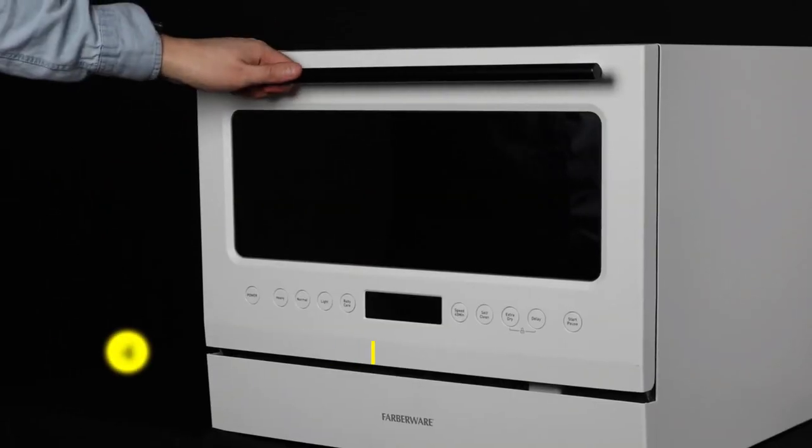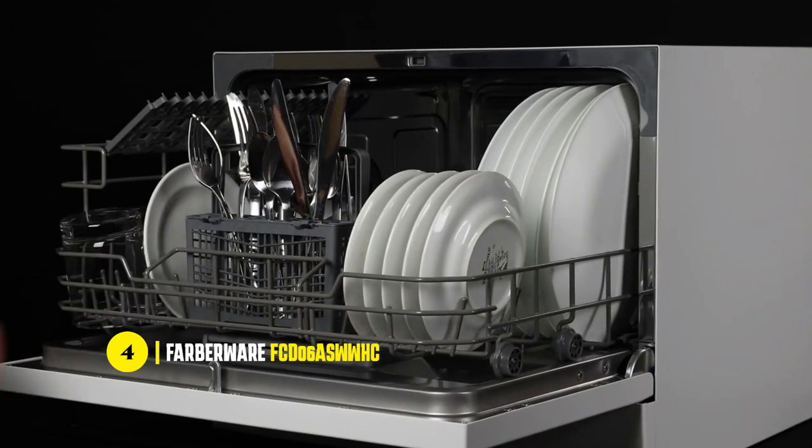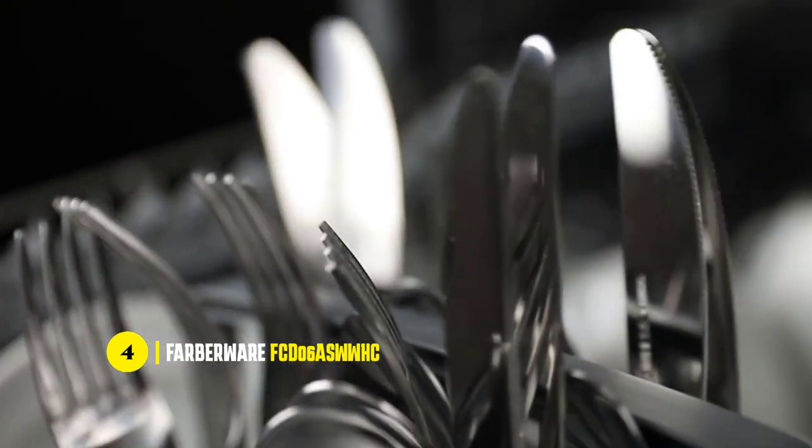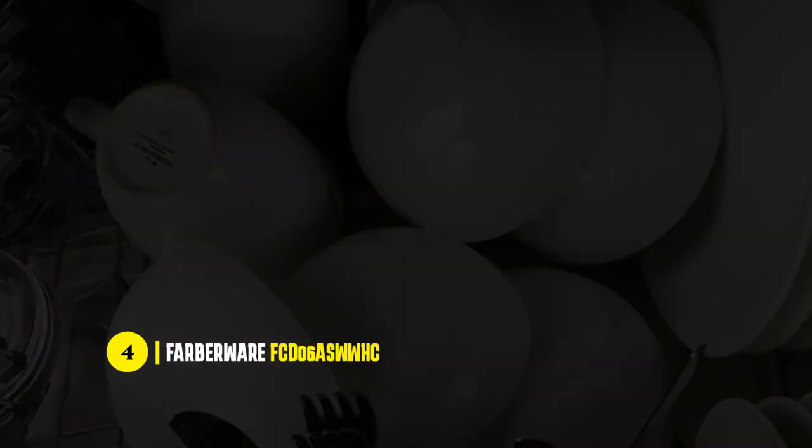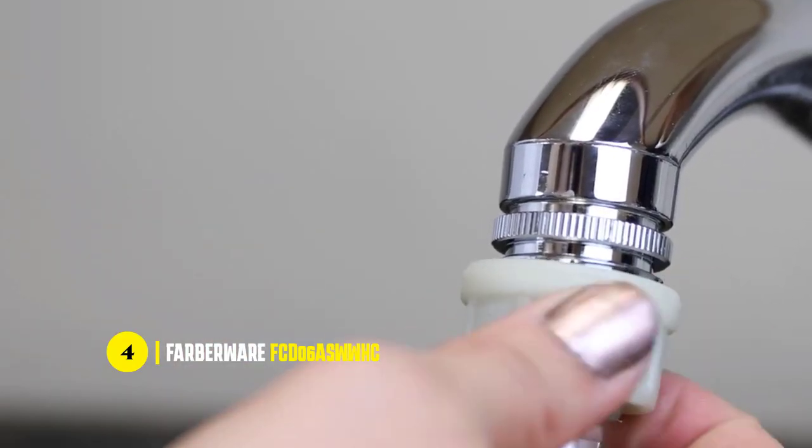First, we'll start off with the Farberware FCD6 Countertop Dishwasher. The dishwasher is a versatile and convenient appliance that is perfect for those who need a compact and efficient cleaning solution. With a six-place setting capacity, it is ideal for small households, apartments, dorms, and even recreational vehicles.